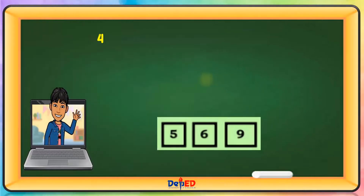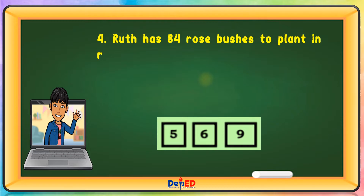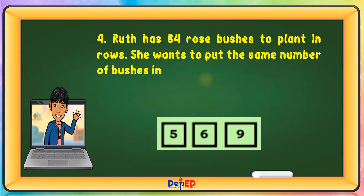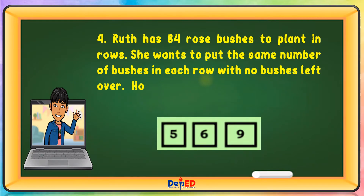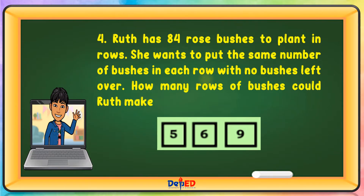Ruf has 84 bushes to plant in rows. He wants to put the same number of bushes in each row with no bushes left over. How many rows of bushes could Ruf make? The answer is 6.